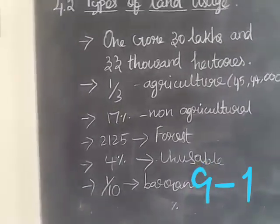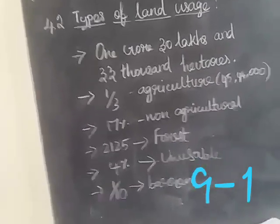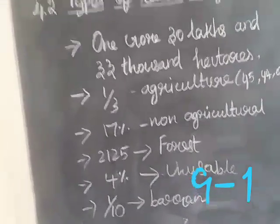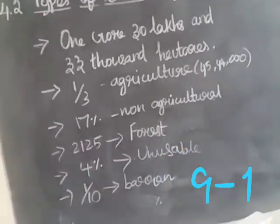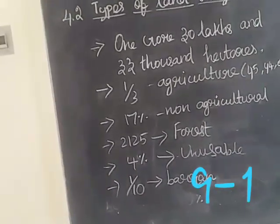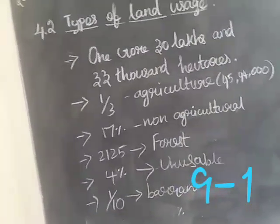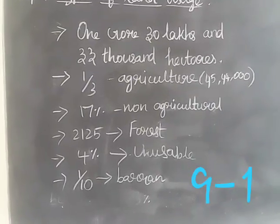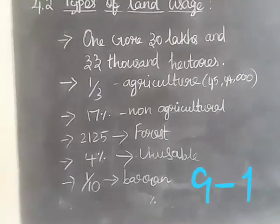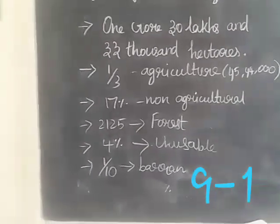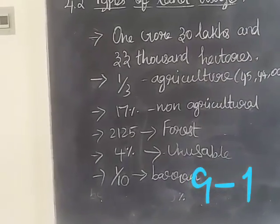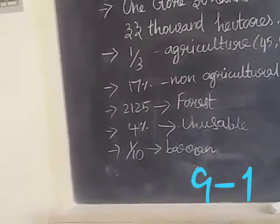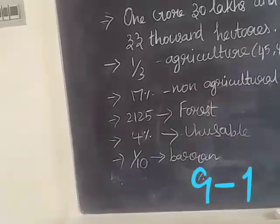To summarize: the total area is one crore 30 lakhs 33,000 hectares. One third is used for agriculture, 17 percentage for non-agricultural use, nearly the same percentage for forest, four percentage is unusable, and one-tenth is barren. We need to be concerned about the increasing size of barren and grazing land.